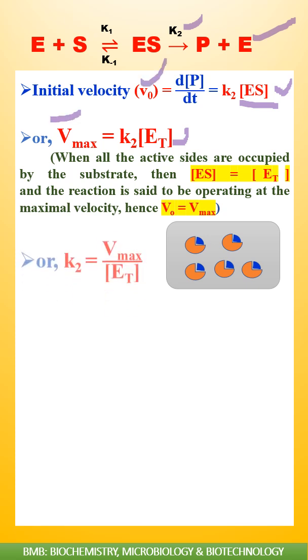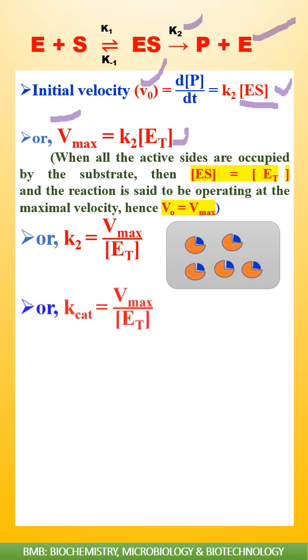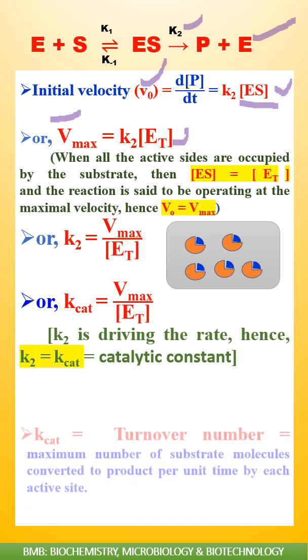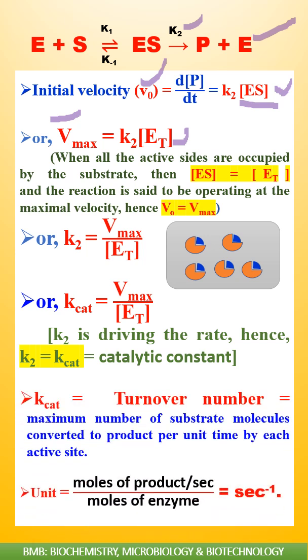We can write this equation as k2 = V_max/E_T, or k_cat = V_max/E_T, where k_cat is the catalytic constant. Since k2 is driving the rate, k2 = k_cat. k_cat equals turnover number, and the unit is per second.